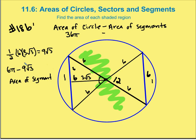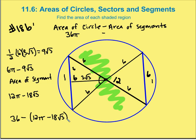Now we just subtract two times that segment area: 2 times (6π − 9√3) equals 12π − 18√3. So the final answer is the circle area minus the two segments: 36π − (12π − 18√3). Distributing gives 36π − 12π + 18√3, which equals 24π + 18√3. That is the area of the entire shaded region — the circle less the two segments.